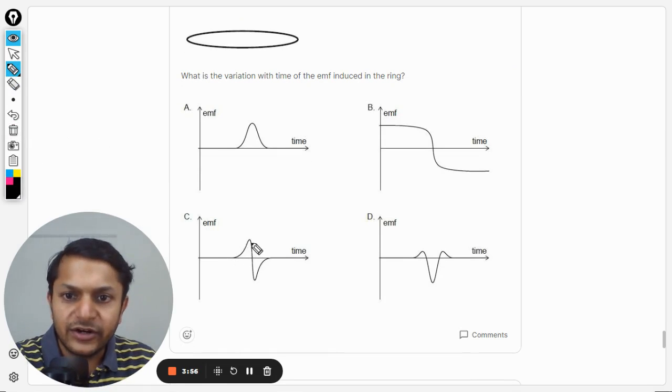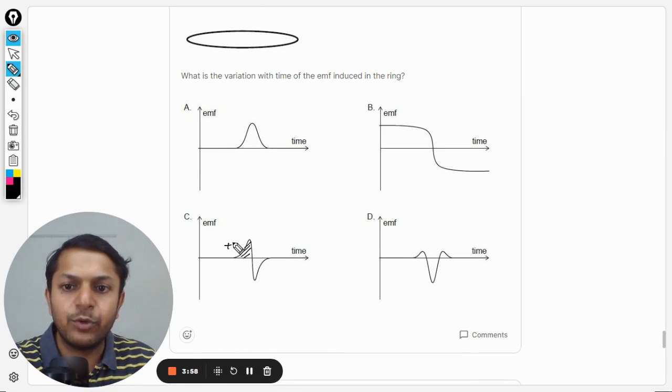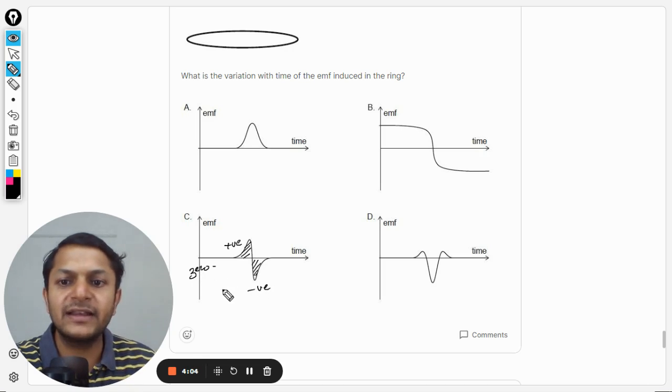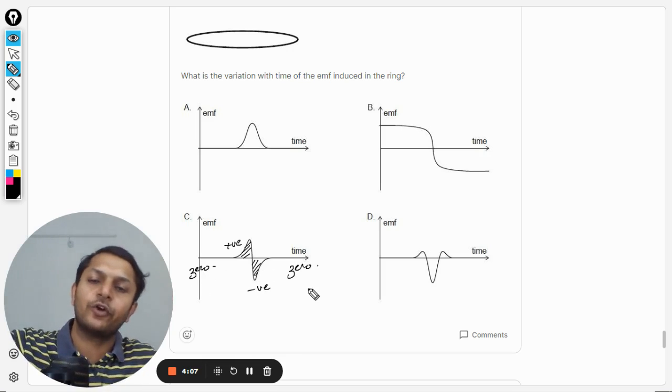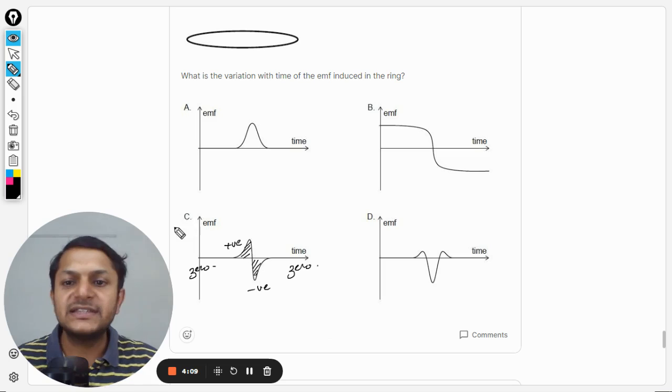Now, so here the EMF induced is positive, later the EMF induced is negative. It is zero when the magnet was far away and it again becomes zero when the magnet is quite far away again. So C is definitely the correct answer.